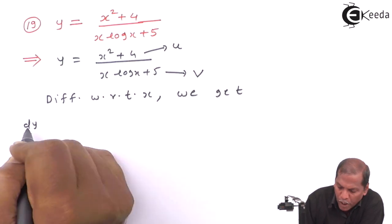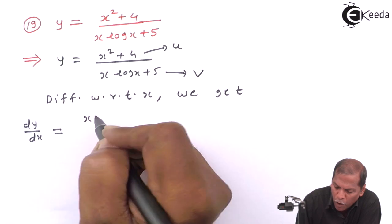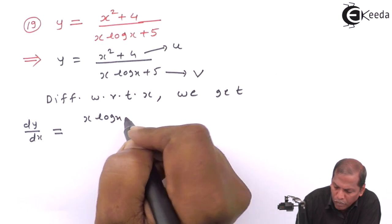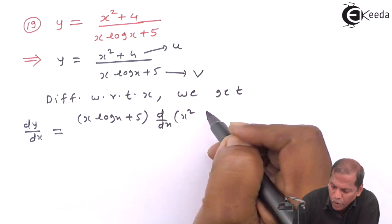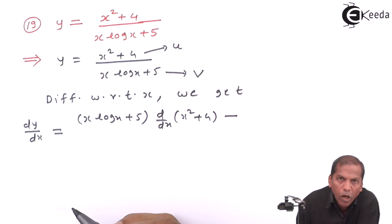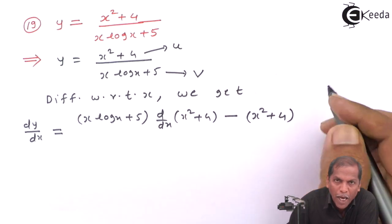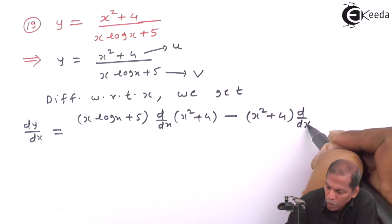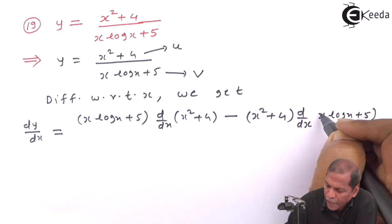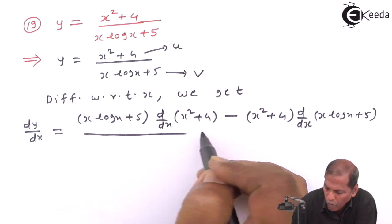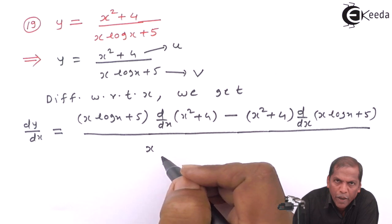The derivative dy/dx equals: (x into log x plus 5), kept as it is, into the derivative of (x squared plus 4), then minus (x squared plus 4), kept as it is, into the derivative of (x into log x plus 5), and the whole thing divided by (x into log x plus 5) bracket squared.